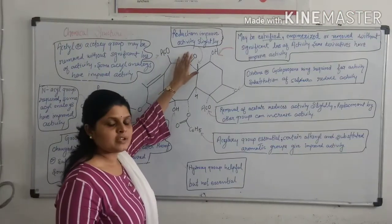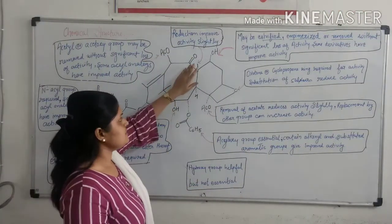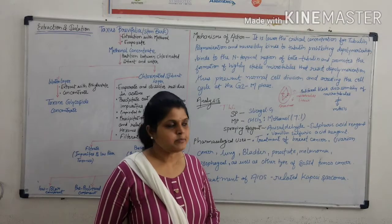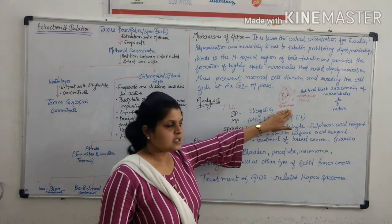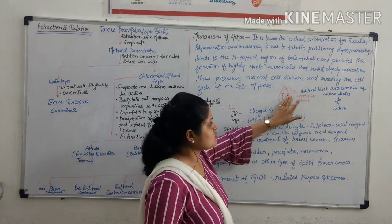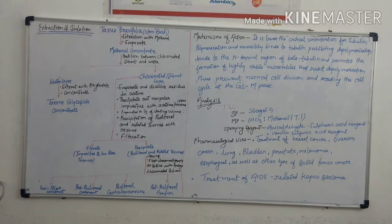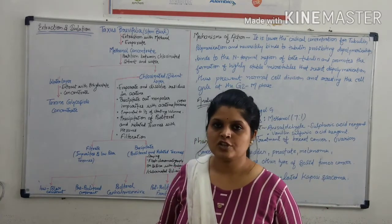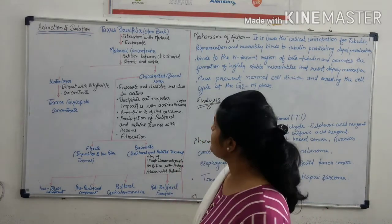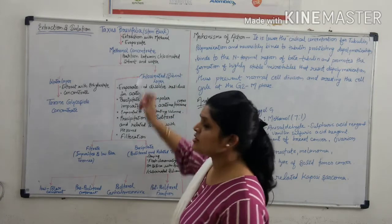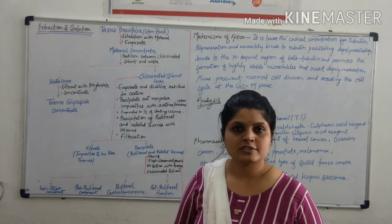When reduction takes place at this position, the activity decreases slightly. Now we will discuss the extraction and isolation of paclitaxel. We will extract the paclitaxel foliage by using methanol as a solvent. This extraction process is done.